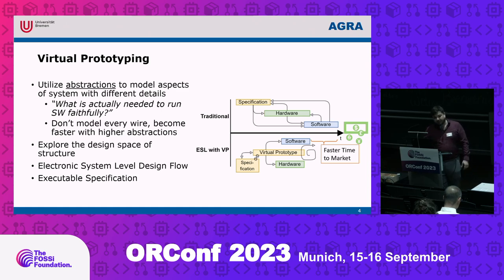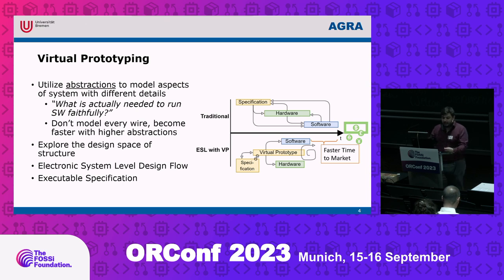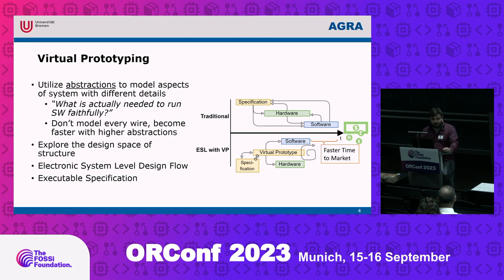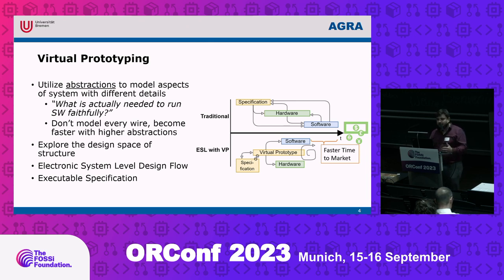Virtual prototyping basically utilizes abstraction and models aspects at an early stage of our system — as much as we need at that point in time. For example, what do we actually need to faithfully execute software? We don't model every wire; we abstract away from that and introduce something like transactions. This allows us to quickly and with a certain confidence explore the design space. The academic term for the layers we work on is the electronic system level design flow, and virtual prototypes can be summarized as an executable specification.